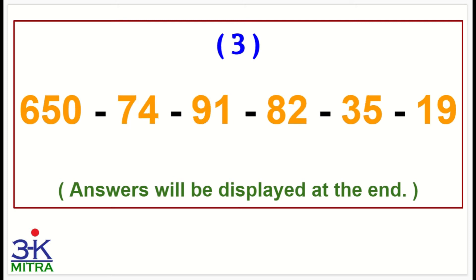Let's move to the third sum now. 650 again, then minus 74, minus 54, minus 91, minus 82, minus 35, minus 19. That is, write down the answer.